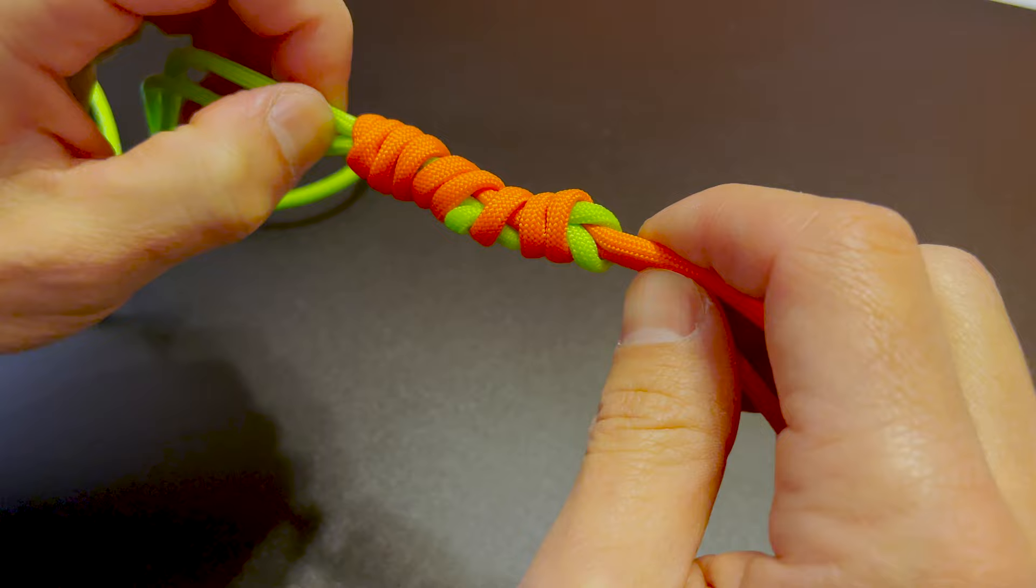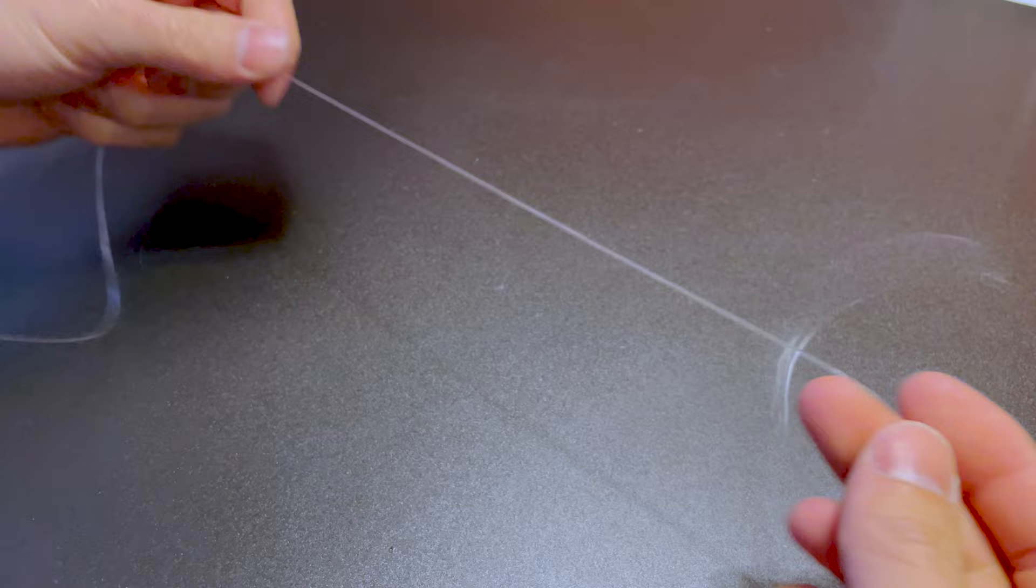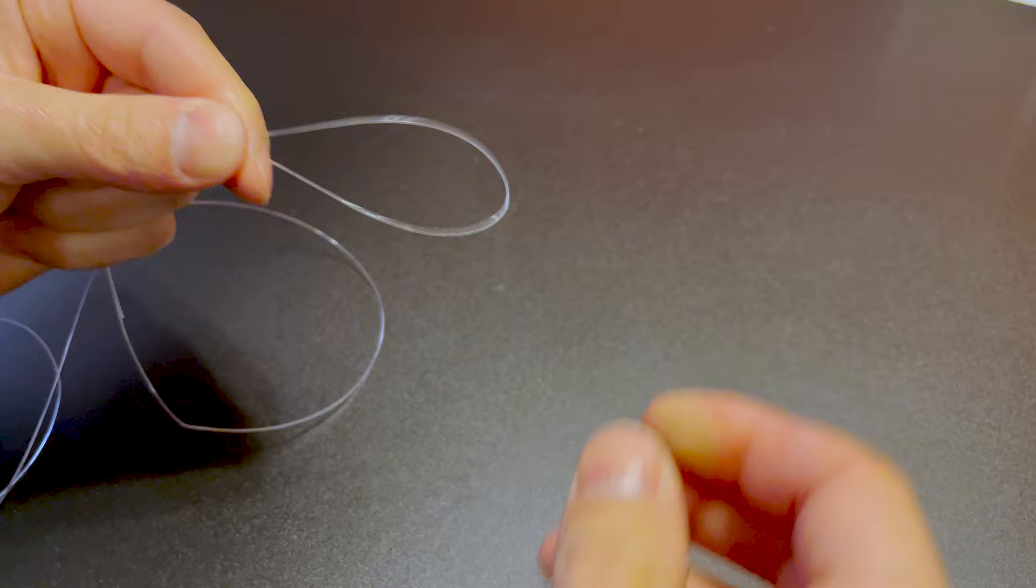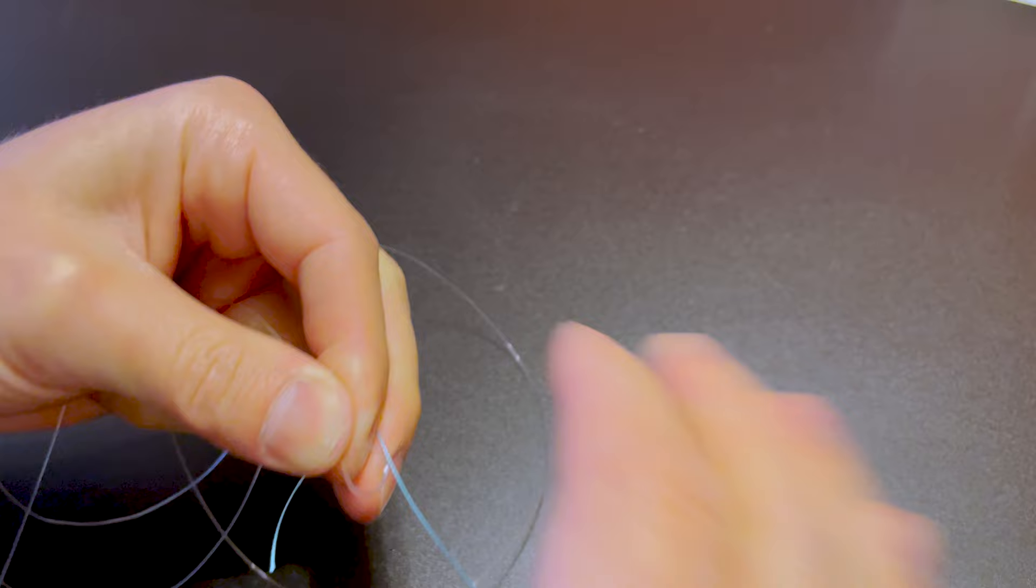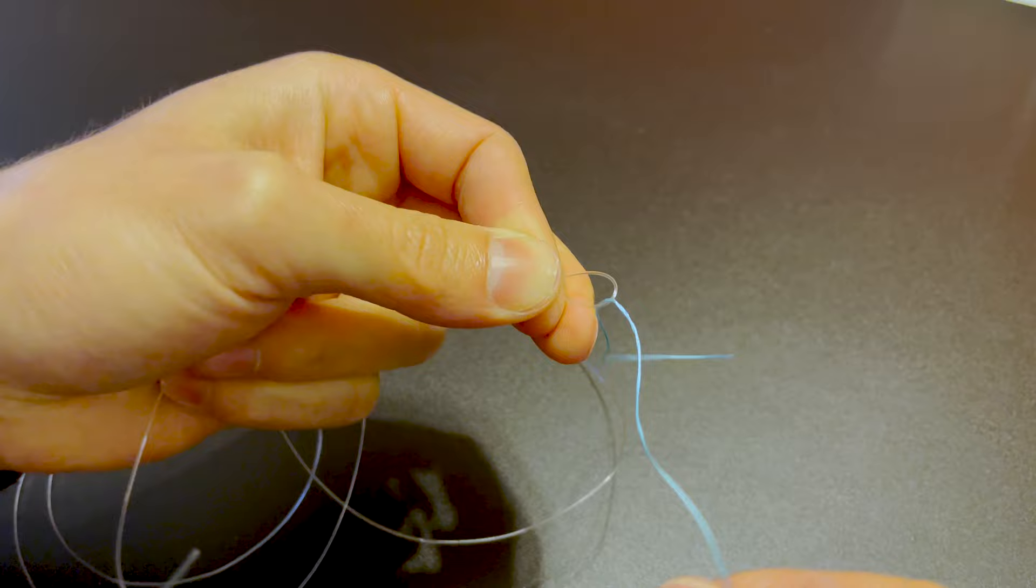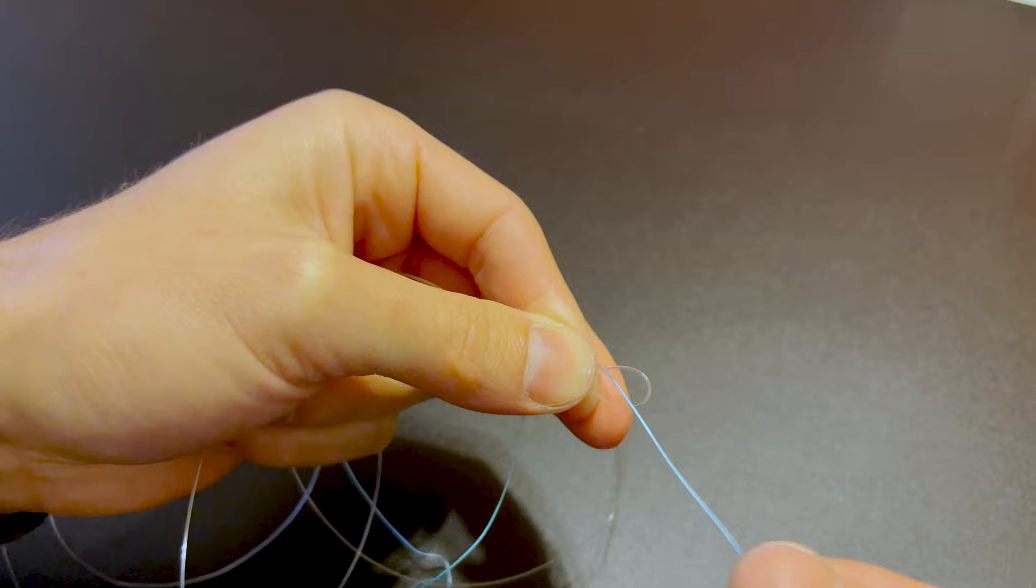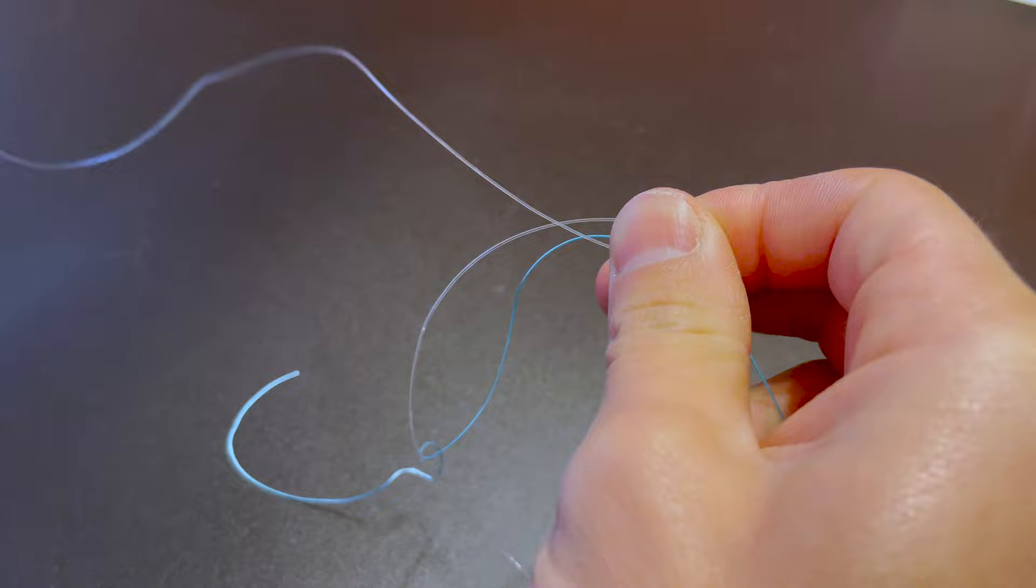Now let's do it with real braid and mono. Take your leader line, fold it over itself just like this so you have a loop. Now take your braid and drop it right down through that loop. And I like to give myself quite a bit to work with. So then you pinch right here. So now you have your leader, you have your tag end, and you have your braid.